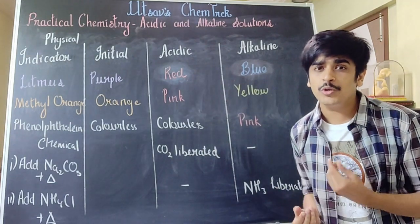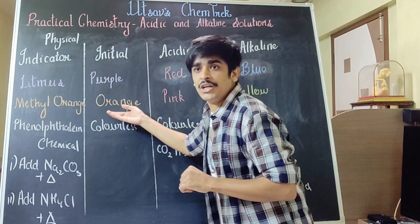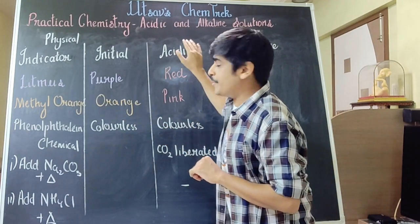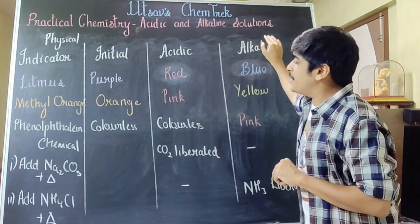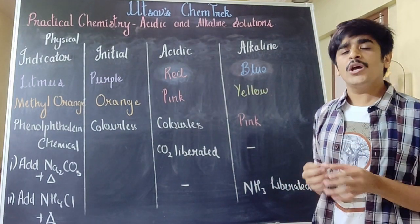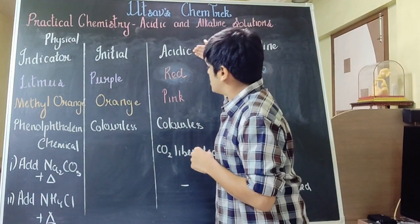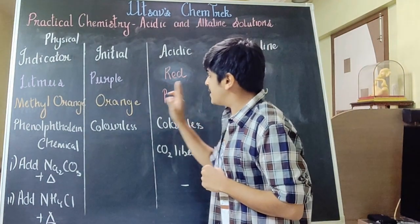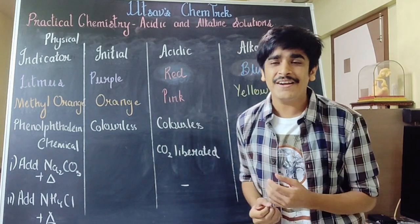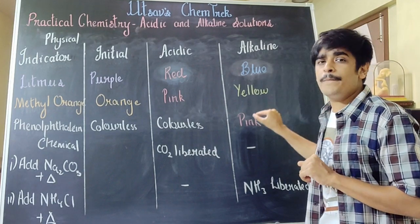The next indicator is methyl orange. It is orange in colour initially. The moment I put it into an acidic medium, it will turn pink, and in an alkaline medium, it's going to be yellow. The last one is phenolphthalein — it is a colourless liquid. The moment I add it to an acidic solution, there is no change; it remains colourless. On the other hand, if I add phenolphthalein to an alkaline solution, it's going to become pink.